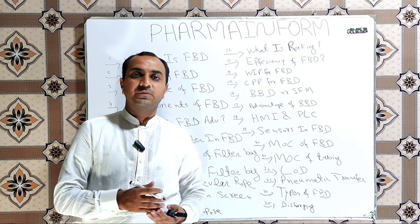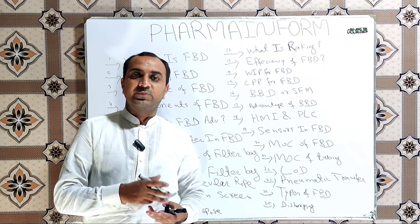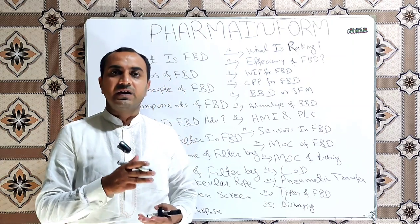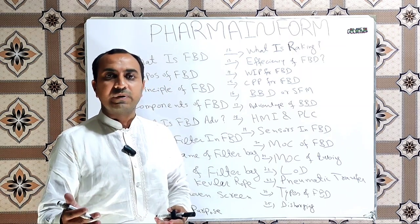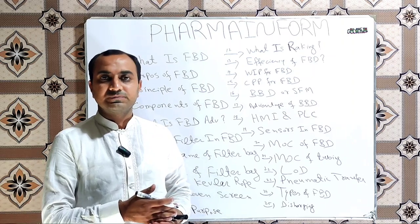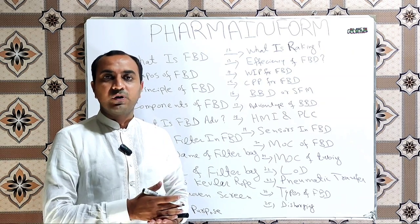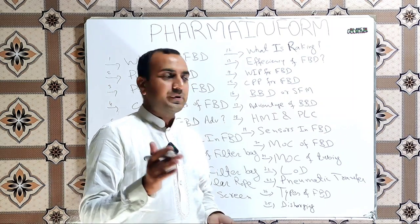So in brief, the most important parts of FBD are product trolley, expansion chamber, lower plenum, inlet duct, outlet filters, commonly bag filter or SS filter, some sensors, and sampling port are the most important components of fluidized bed dryer.